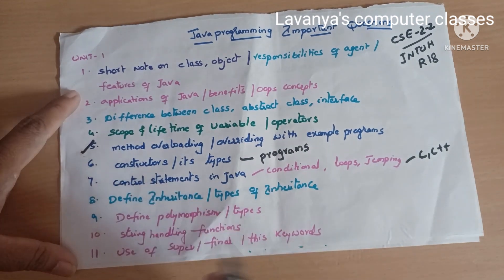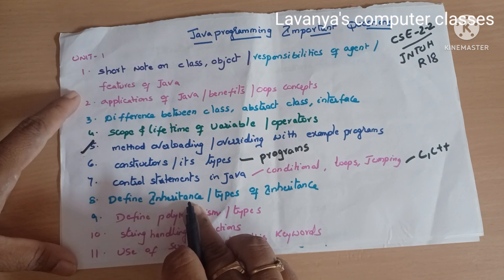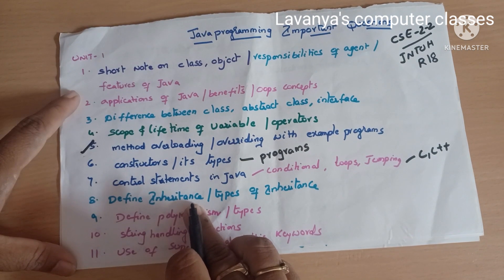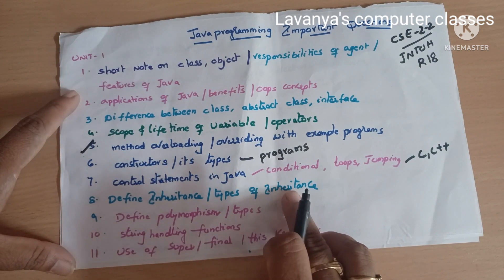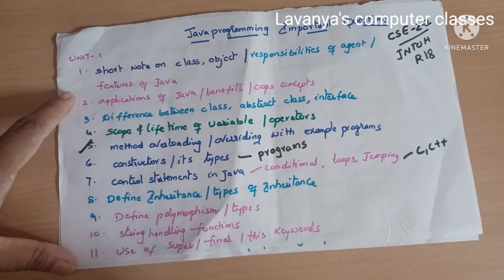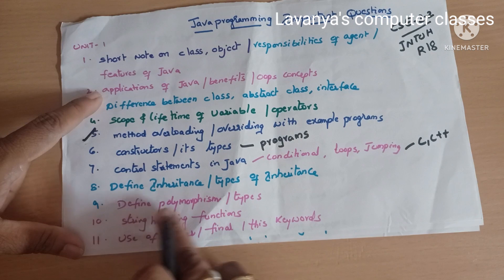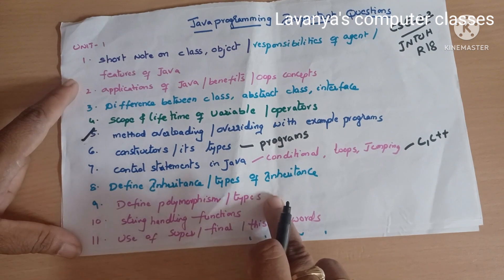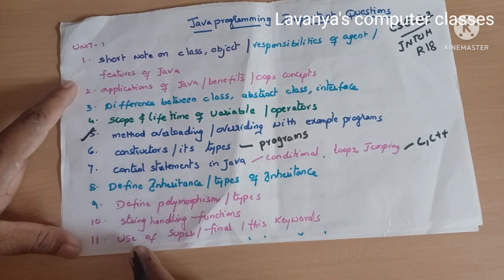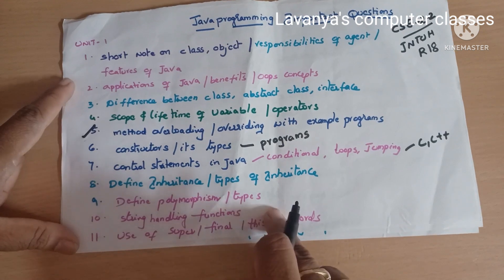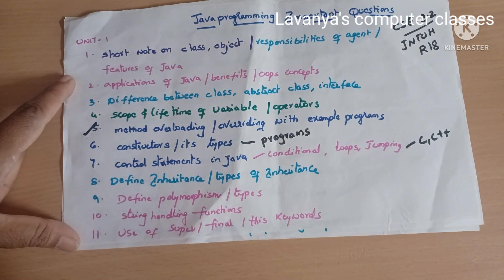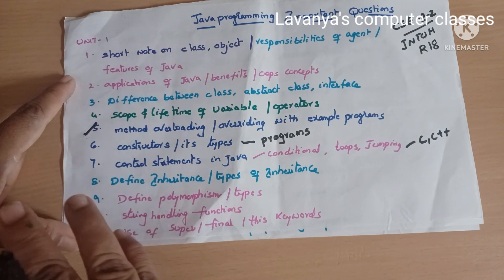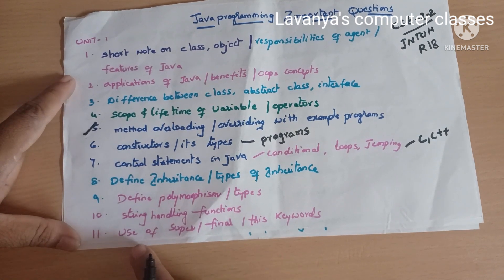Next, inheritance concepts — what is inheritance, types of inheritance — learn these with programs. Then define polymorphism and types of polymorphism. String handling functions, similar to C language, are important — learn string handling with programs as one complete concept.